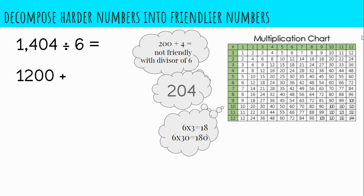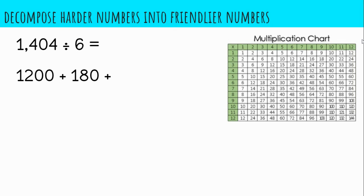However, I do know that 6 times 3 is 18, so 6 times 30 is 180, and 180 would be a friendly number to help decompose 204. And that would leave us with 24 left over, which 6 times 4 is 24.